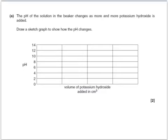The pH of the solution in the beaker changes as more potassium hydroxide is added. Draw a sketch graph to show how the pH changes. Well, if we're starting off with nitric acid in the flask, then the pH is going to be around about 1. It's going to stay at 1 while more is added, but when it gets close to neutralisation, it's going to shoot up through past 7 up to a fairly high pH, and then it's going to rise very slightly more until it levels out.